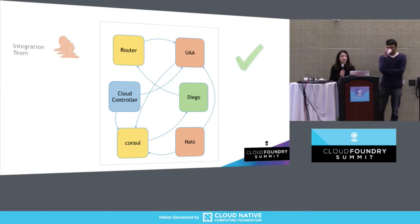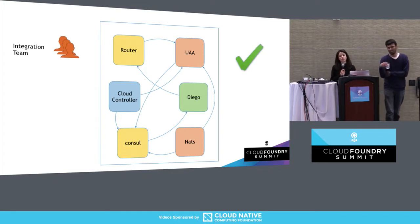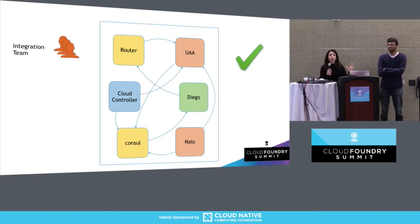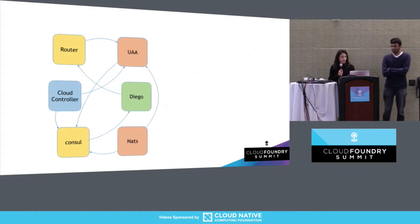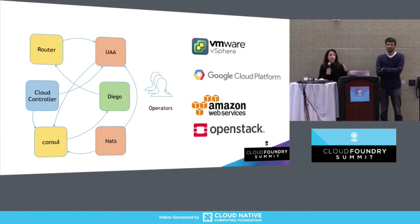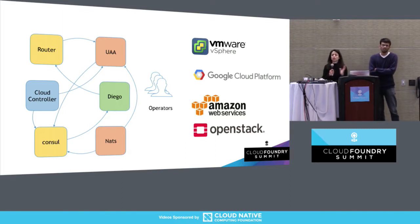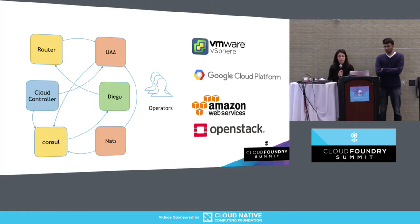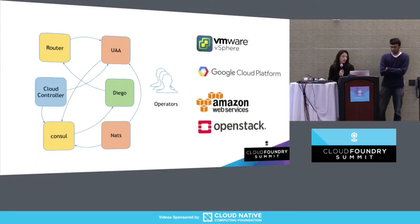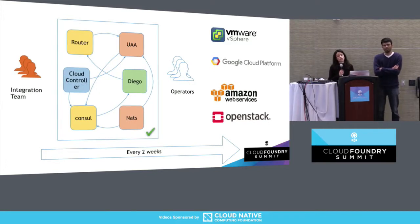Once teams have released their own components, the Cloud Foundry product needs to come together. An integration team ensures that communications work and the whole system works well together, placing a stamp of approval on it. This gets packaged as a Cloud Foundry product for operators, who can then deploy it on a number of different infrastructures — and it should work on each one transparently, the same way on vSphere as on AWS. This whole cycle needs to happen every two weeks.